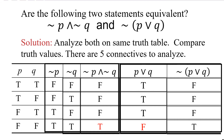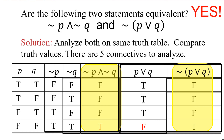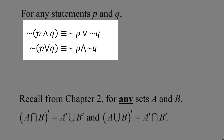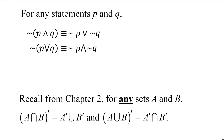Now we're going to compare the values of the statement negation P and negation Q to the values of negation of parentheses P or Q, and we see that they're the same. That means they're equivalent statements — they're logically equivalent. So the answer to the question, are the following two statements equivalent, is yes, they are. So the two types of equivalent logical statements that we've just seen are listed here on the screen. They are each one of DeMorgan's laws for logic.